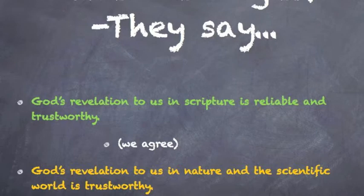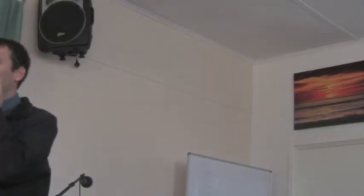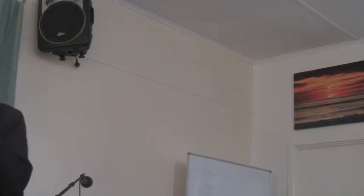They also say, this is yellow now so be careful, God's revelation to us in nature and the scientific world is trustworthy. Can we trust science? Well, I think we can sometimes. We've got to be careful. In the Bible it says the heavens declare the glory of God. So what these three people say is, if the heavens declare the glory of God, how can the heavens lie to us? If the heavens tell us the earth is x million years old, therefore it must be x million years old, and the Bible must just need to fit into that somehow. We've got to be careful with this one. We've got to be careful as scientists that we interpret in the right way.